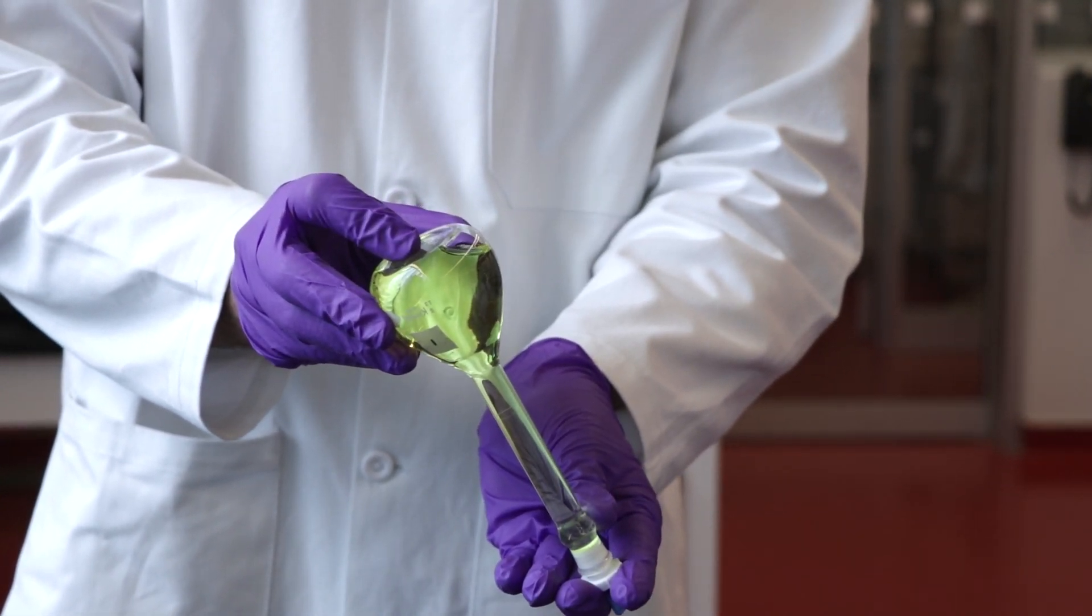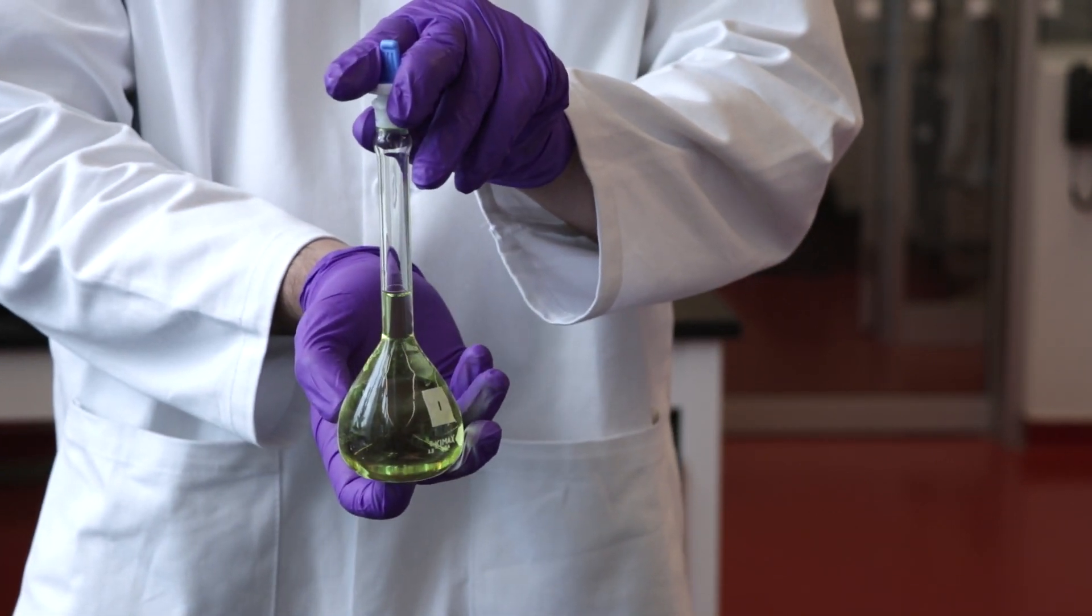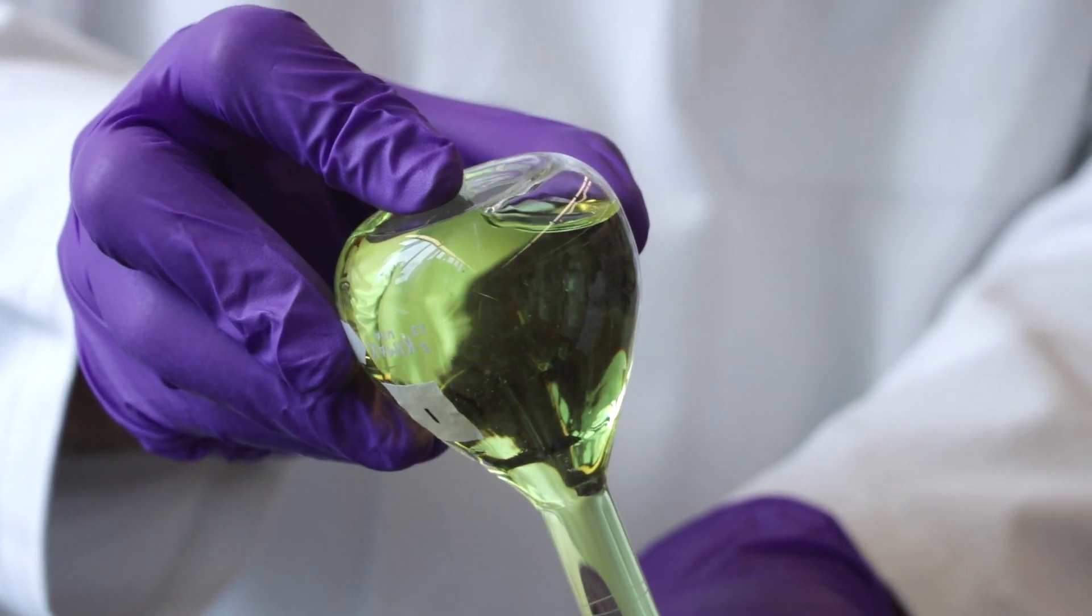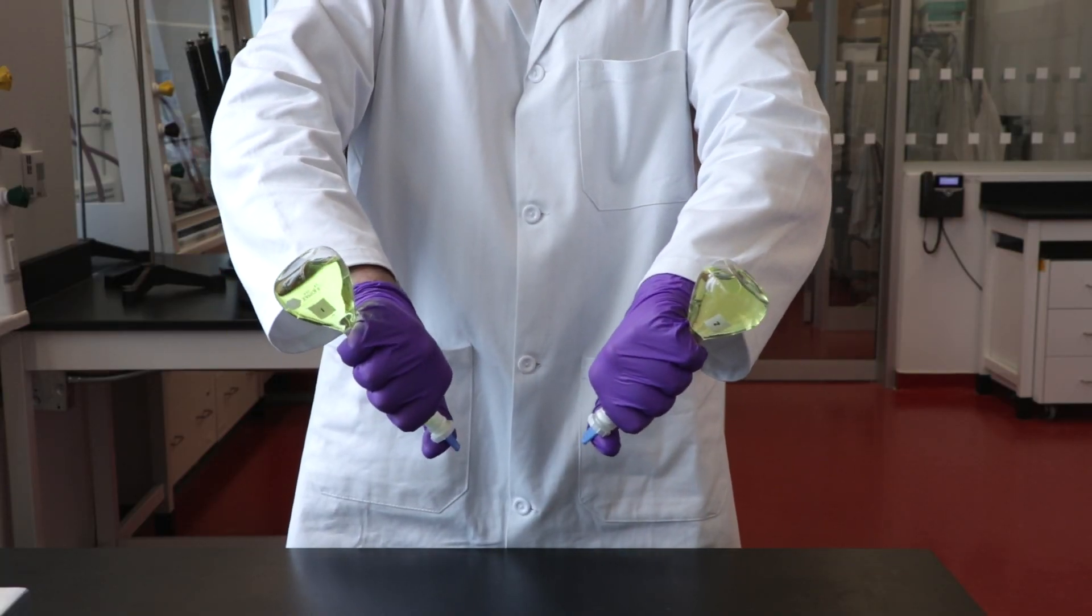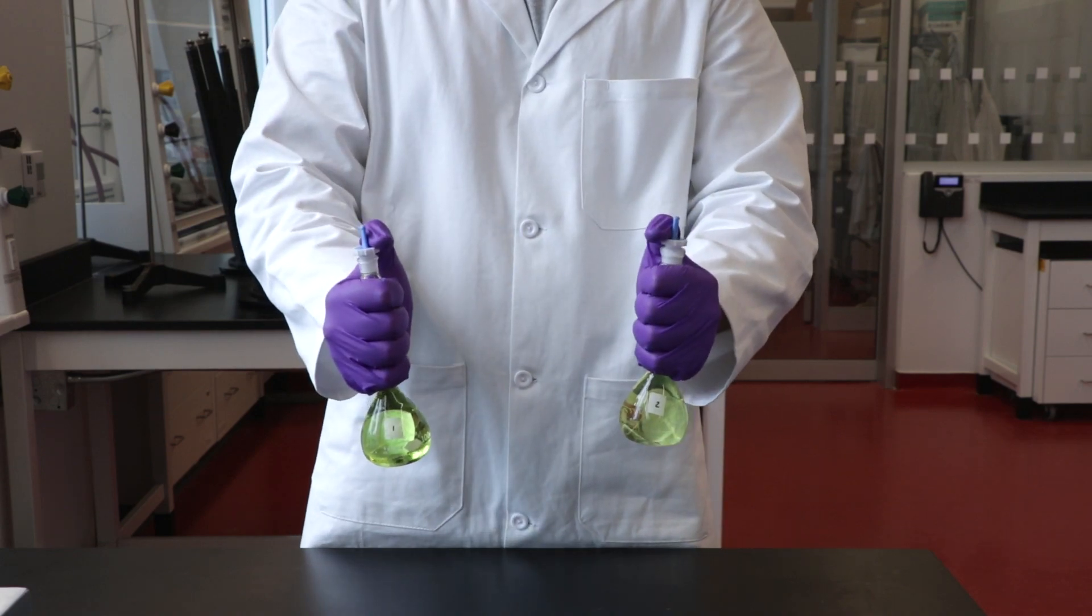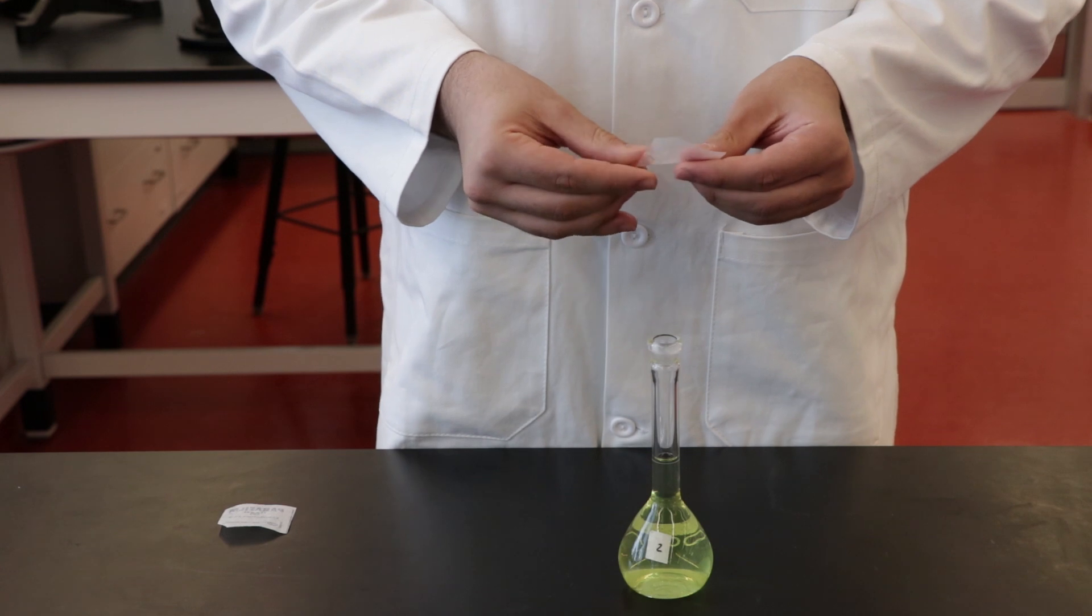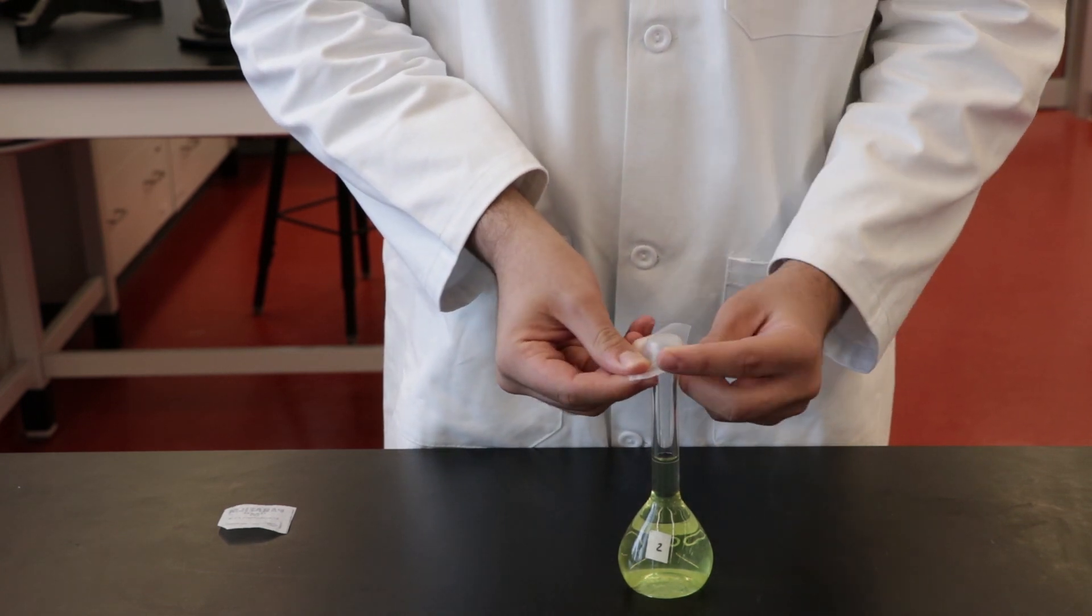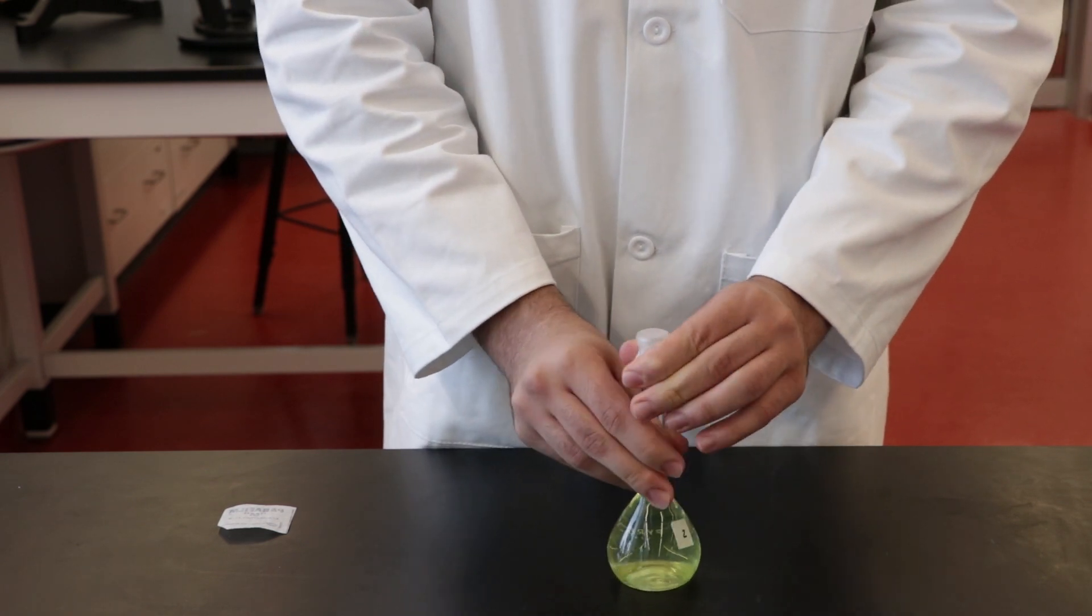You can either take one flask at a time and place one hand on the bottom and the other over the stopper and invert 20 to 30 times. You should perceive an air bubble moving from the bottom of the flask to the top. Or you could take two flasks, one in each hand. If a stopper is not available, you can use parafilm to cover the top of the volumetric flask. Stretch a piece of parafilm over the top and seal securely before inverting the flask.